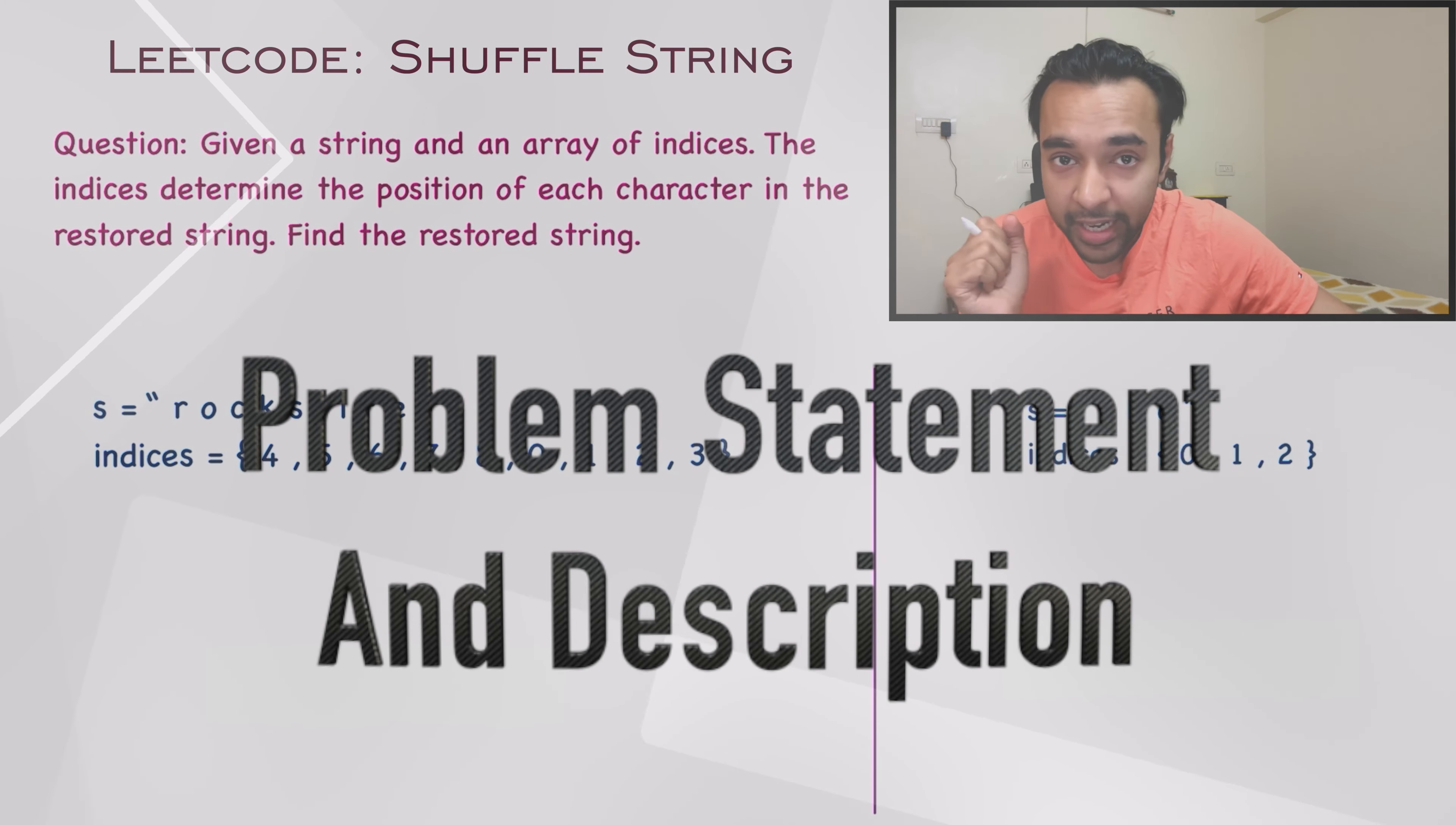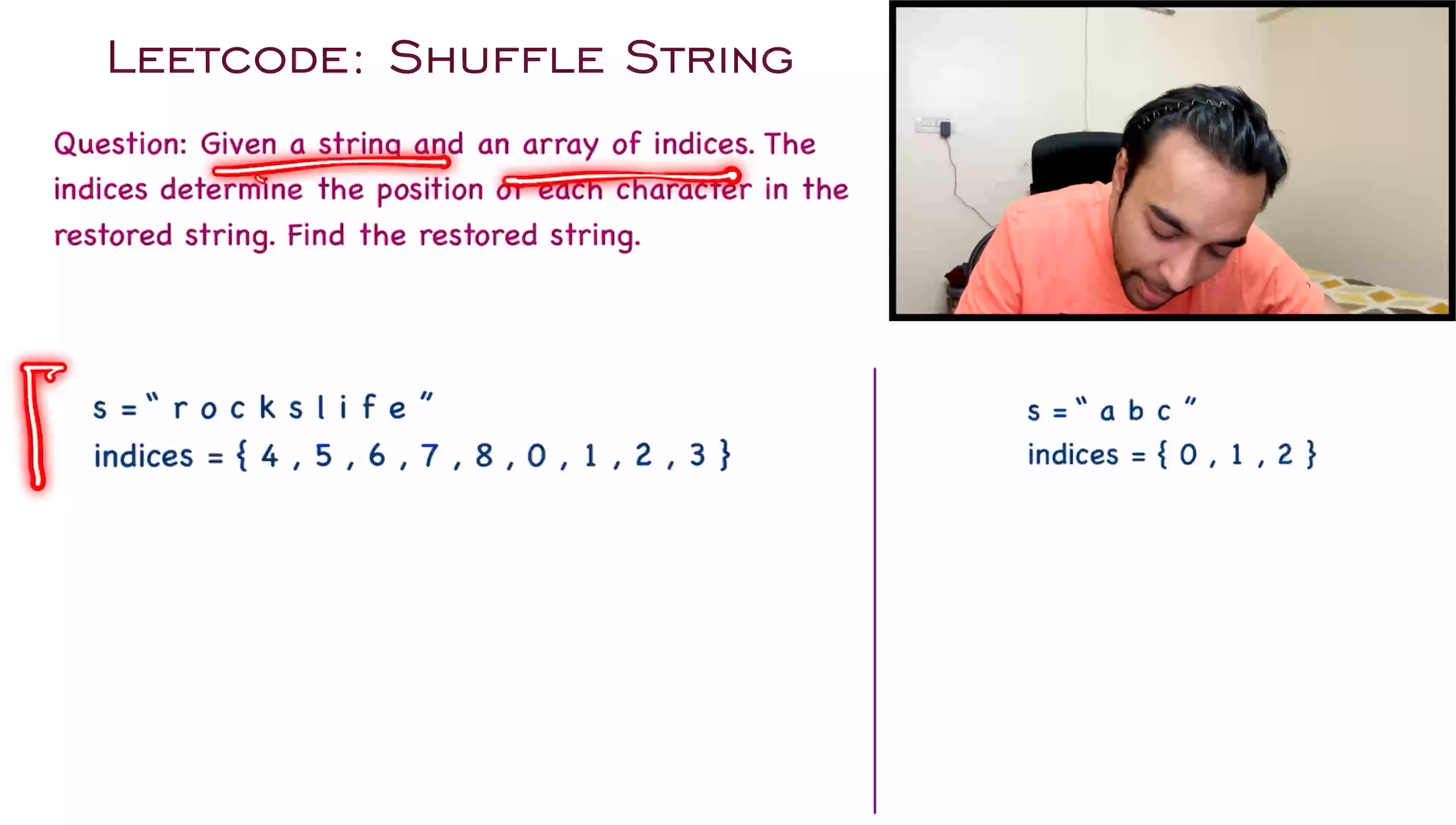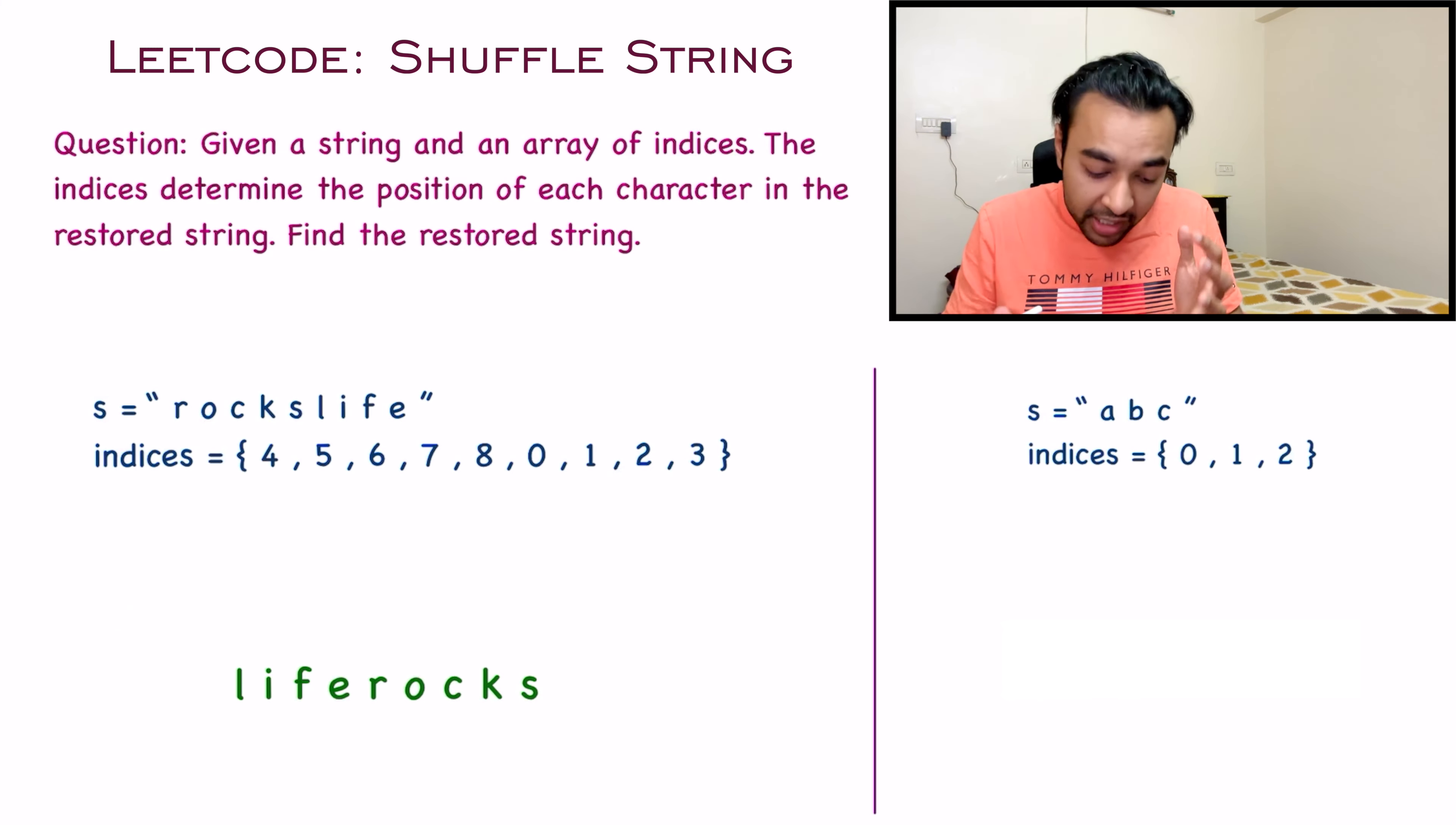Let us make sure that we are understanding the problem statement correctly. In this problem you are given a sample string and an array of indices. So what does this array of indices actually tell you? Let's look at a sample test case. In our sample test case you can see that I have this string and this array of indices. This array of indices is telling me that in my final string, R will be at the fourth position. Once again in my final string, this character E will come at the third index. For this particular test case, this string will be your answer.